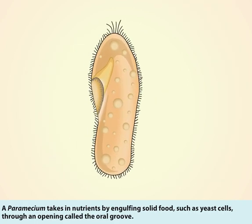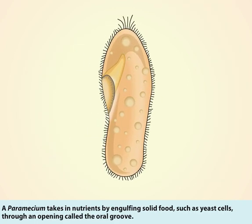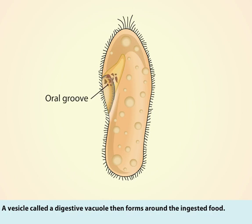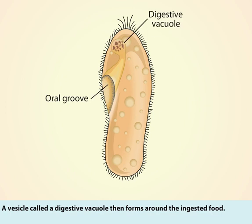A paramecium takes in nutrients by engulfing solid food, such as yeast cells, through an opening called the oral groove. A vesicle, called a digestive vacuole, then forms around the ingested food.